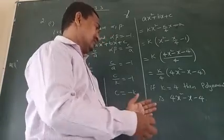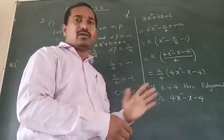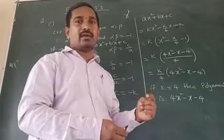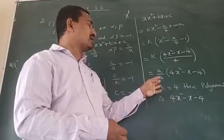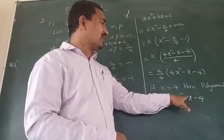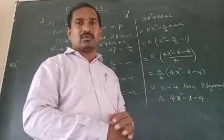Here what is the fixed value of k? Not fixed. We can get many values of k. What is suitable for k value? If we take k equal to four, four by four is one. Then we can get the polynomial: four x square minus x minus four.